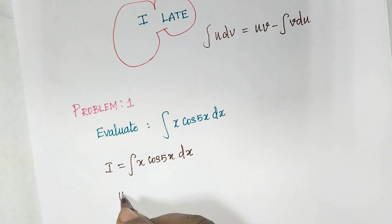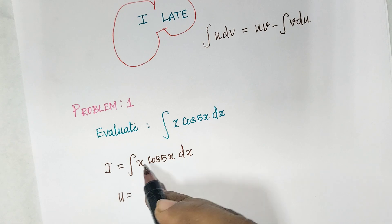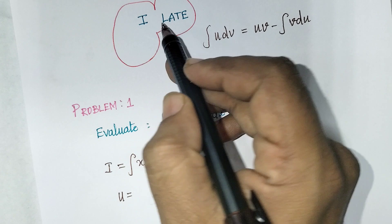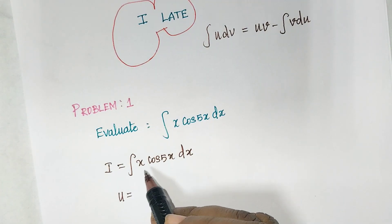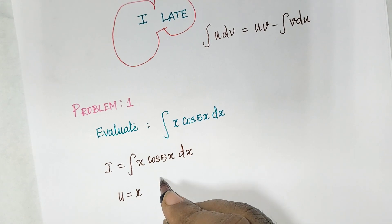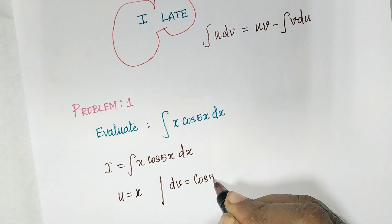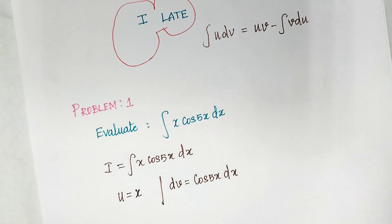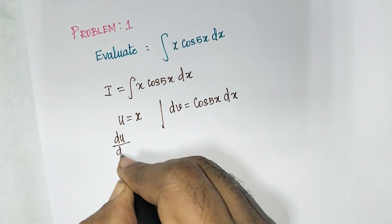Using ILATE: there is no inverse term, no logarithmic term — next is algebra, and here we have the algebra term x. So u equals x, and the rest is dv. We take dv equal to cos(5x)dx. Now differentiate u with respect to x: du/dx equals 1.